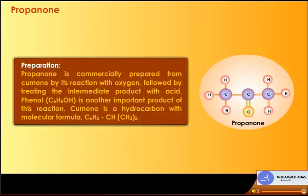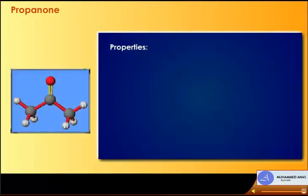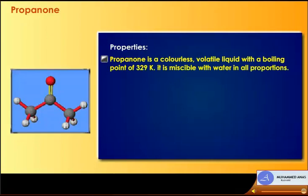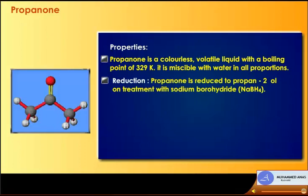Preparation of propanone: it is commercially prepared from cumene by its reaction with oxygen, followed by treating the intermediate product with acid. Phenol (C6H5OH) is another important product of this reaction. Cumene is a hydrocarbon with molecular formula C6H5CH(CH3)2. Properties: propanone is a colourless volatile liquid with a boiling point of 329 K, miscible with water in all proportions.